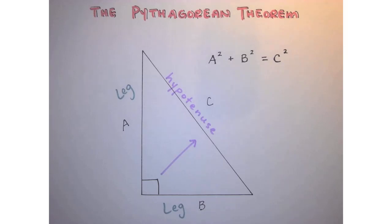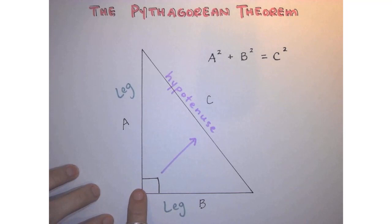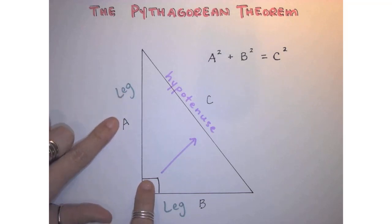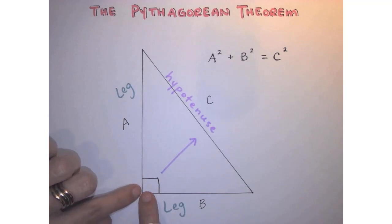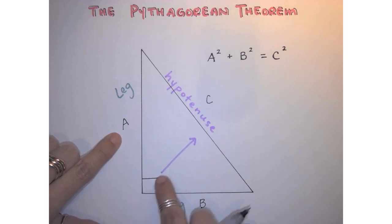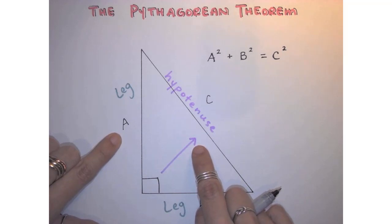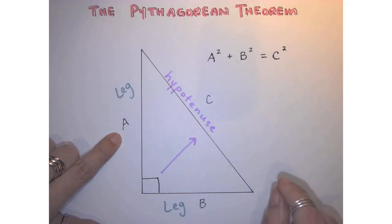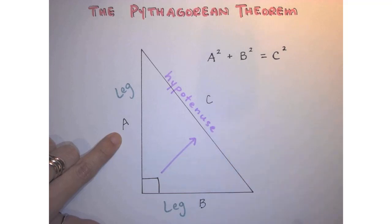The Pythagorean Theorem states that if you have a right triangle — indicated by this box down here to show that this is 90 degrees — then one leg makes up one side of the right triangle, another leg makes up the other side, and we call those legs A and B. The side length on the opposite side of the right angle is called the hypotenuse, which is always the longest length in the triangle, and we will always refer to the hypotenuse with the letter C.